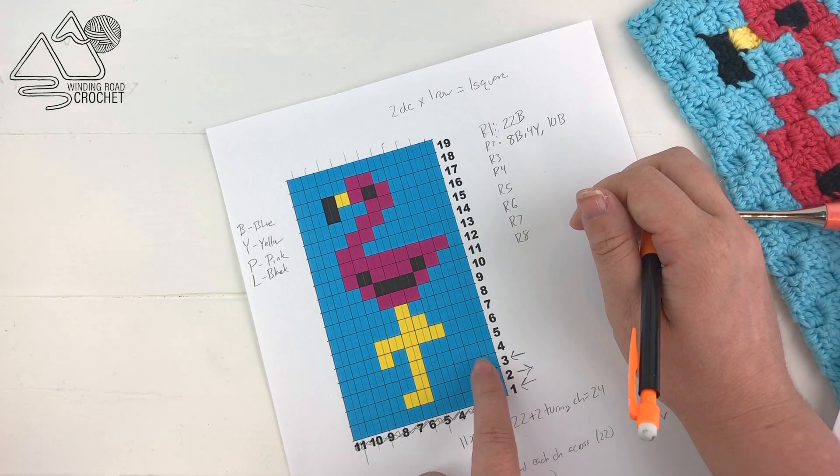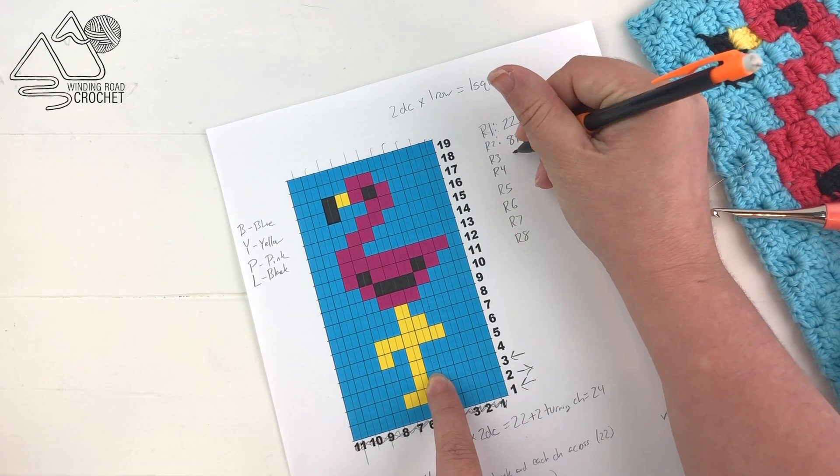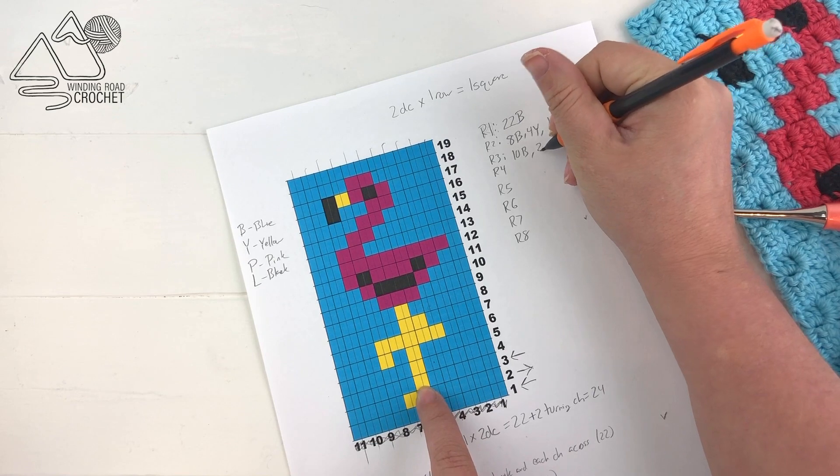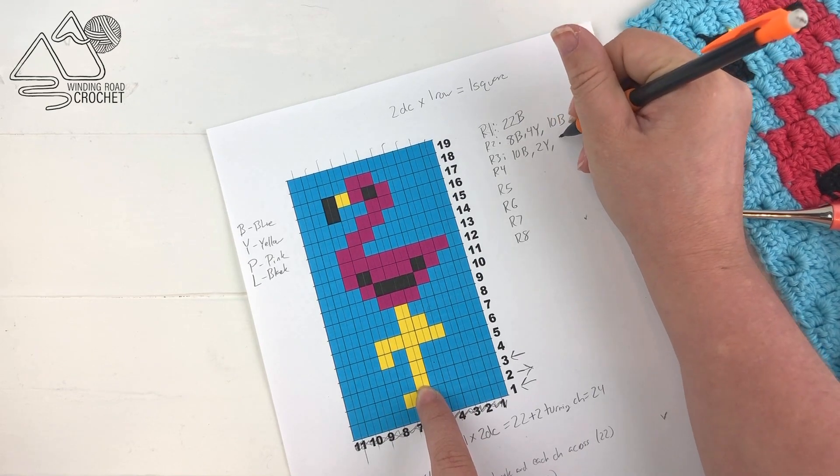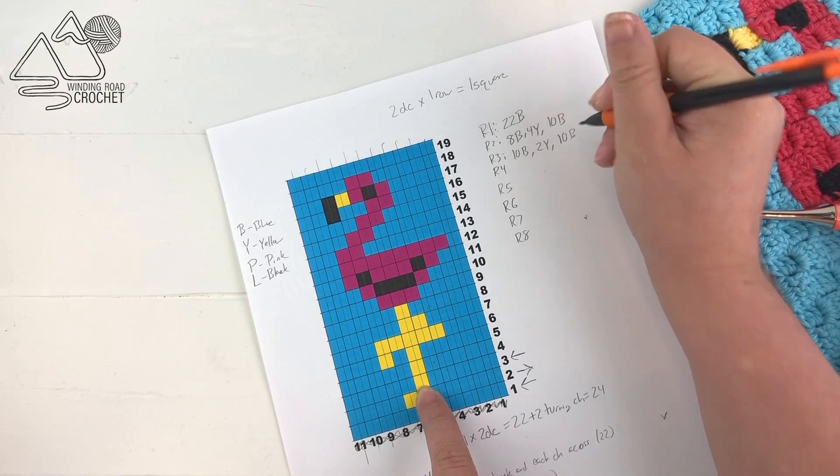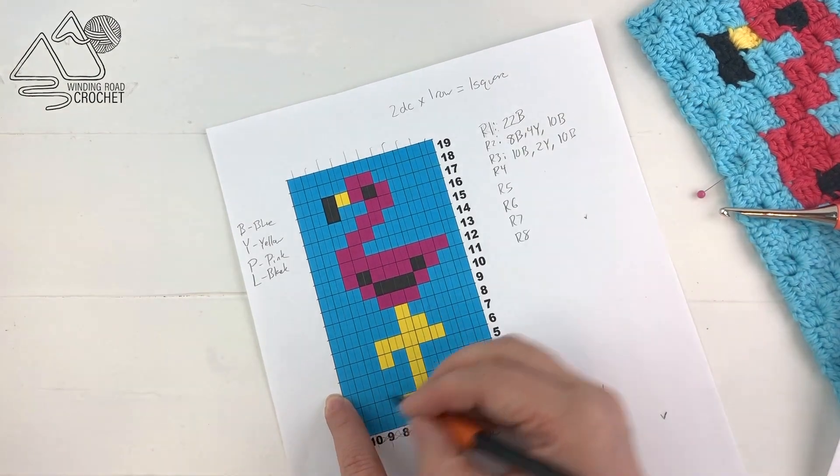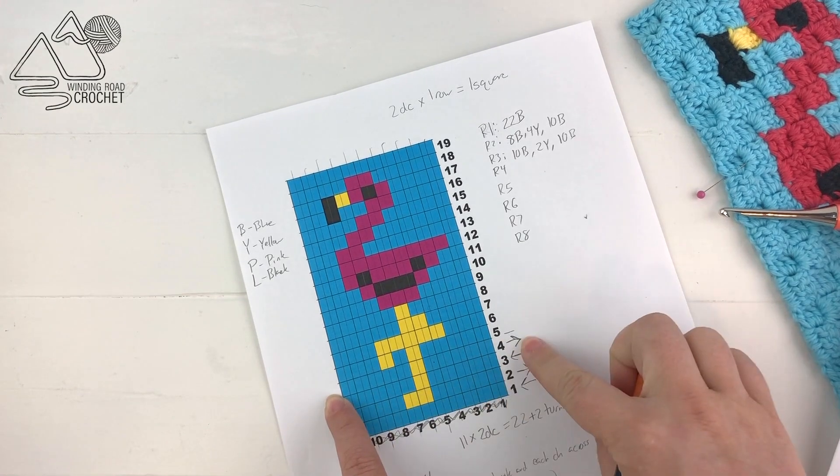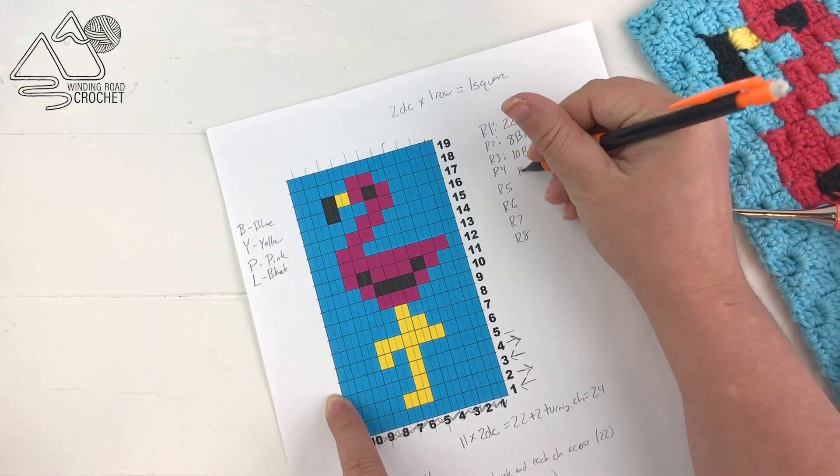Now moving up to row three, we're moving from the right to the left. And this is the reason, since we're changing directions each time, this is part of the reason it's really nice to go ahead and write out your pattern. It also gives you a really good chance to kind of consider where you're going to have color changes.